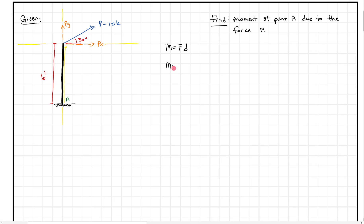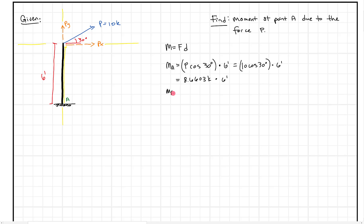So that's one advantage of taking components. We can say MA due to PX equals P times cosine of 30 degrees times six feet. When we solve that out, the moment at A equals 51.96 kip-feet due to this force. That looks pretty good — we're good with our components and it all makes sense.